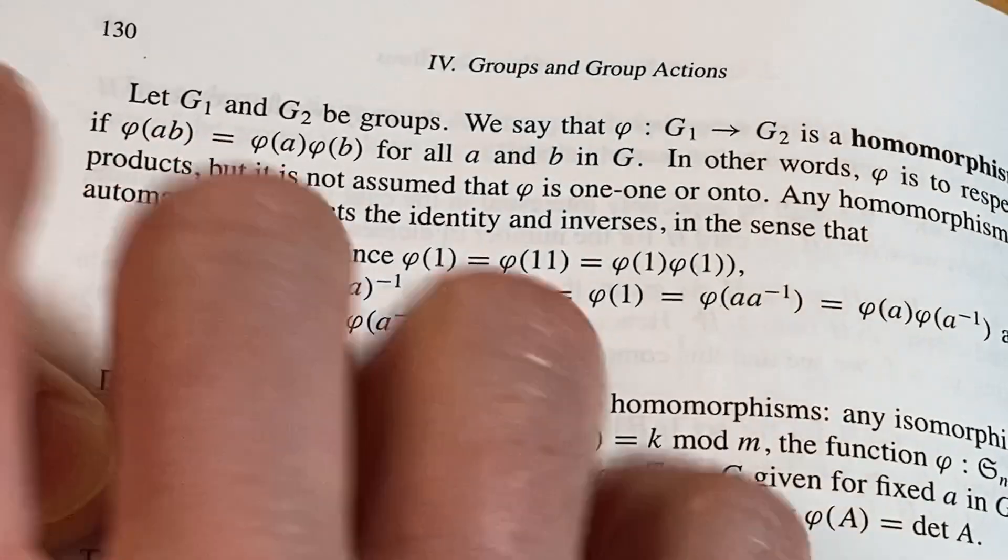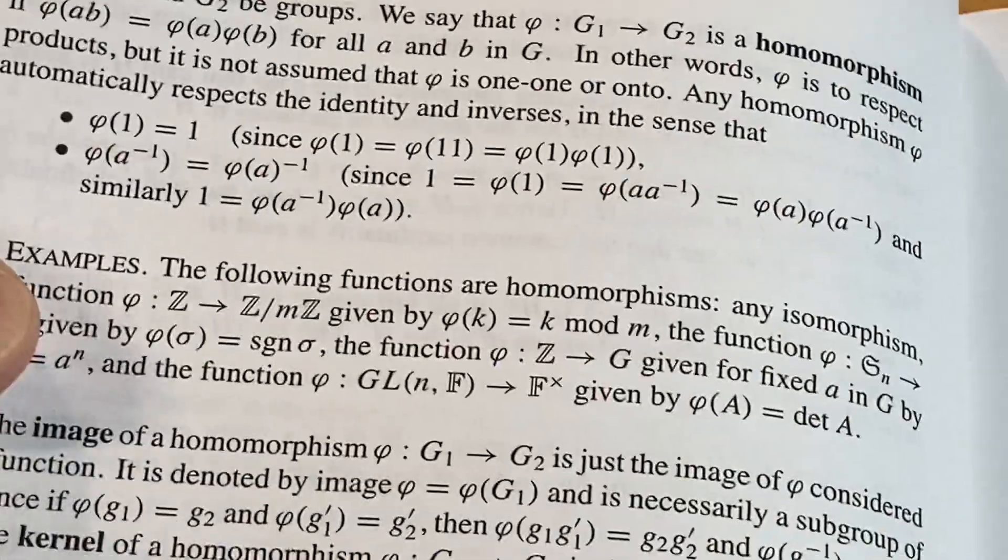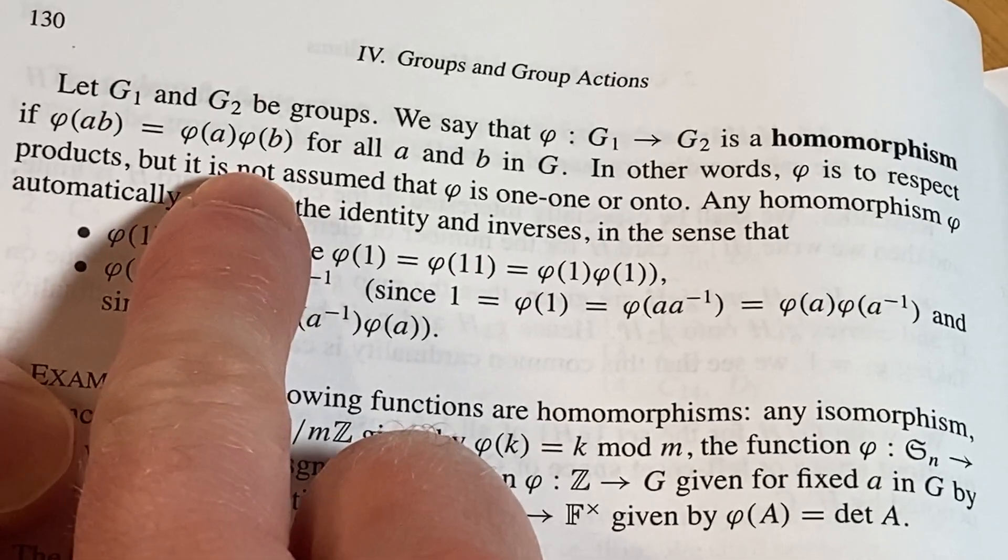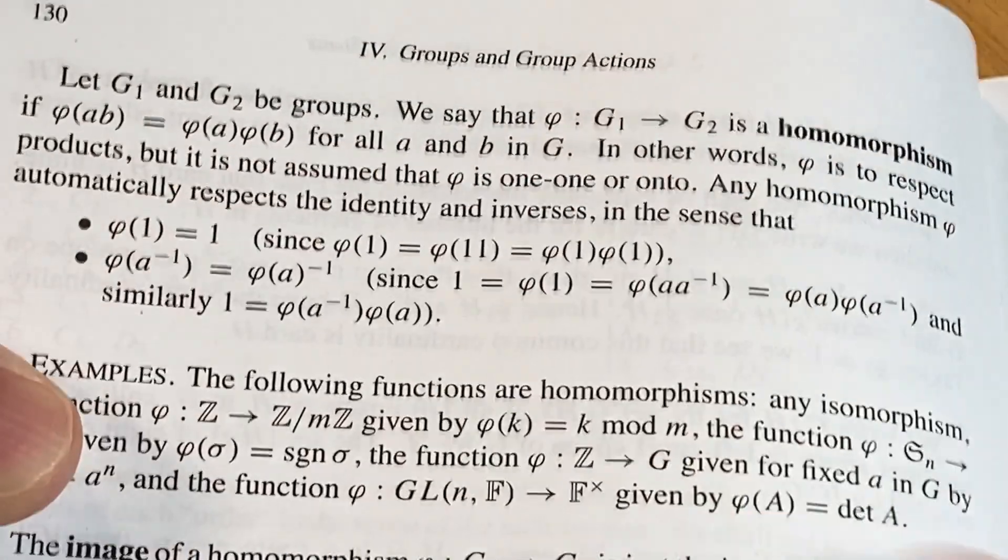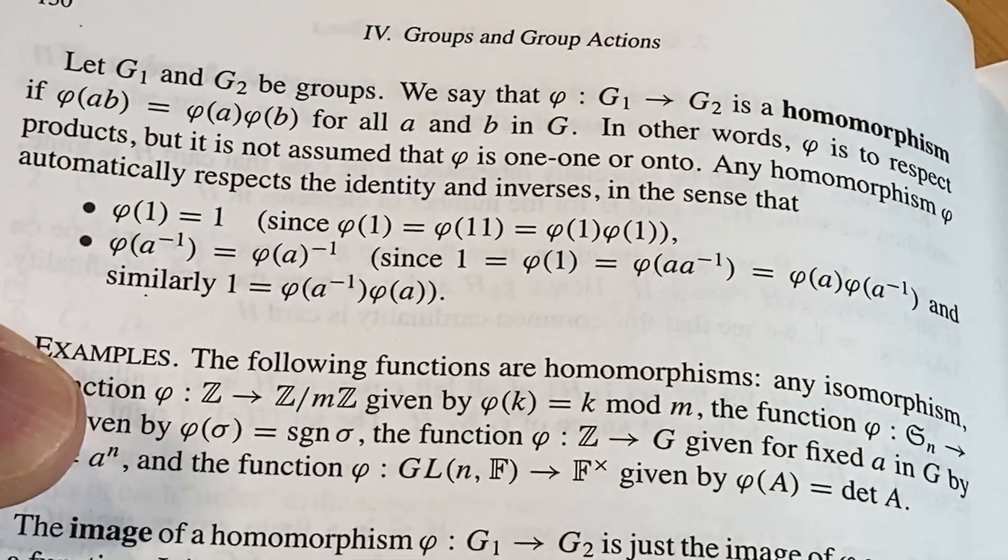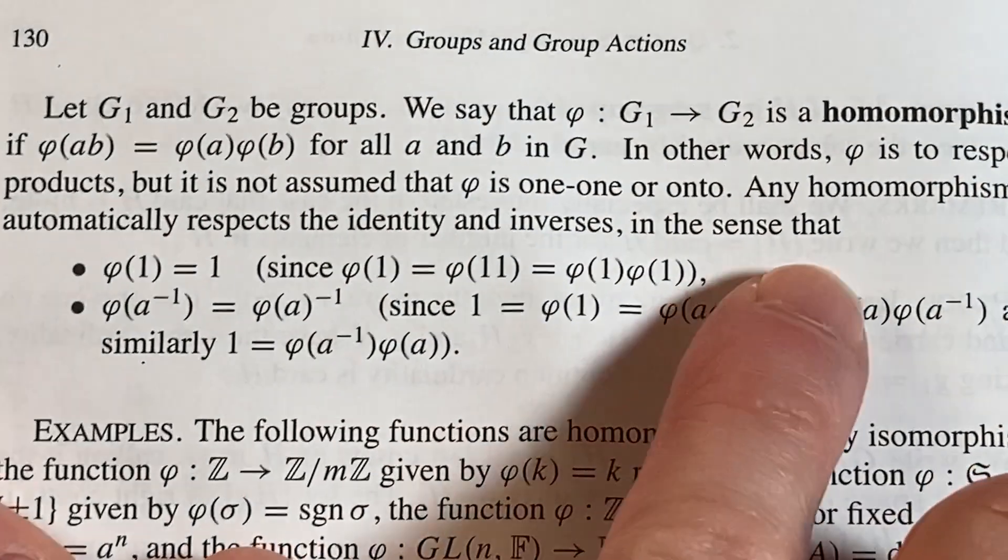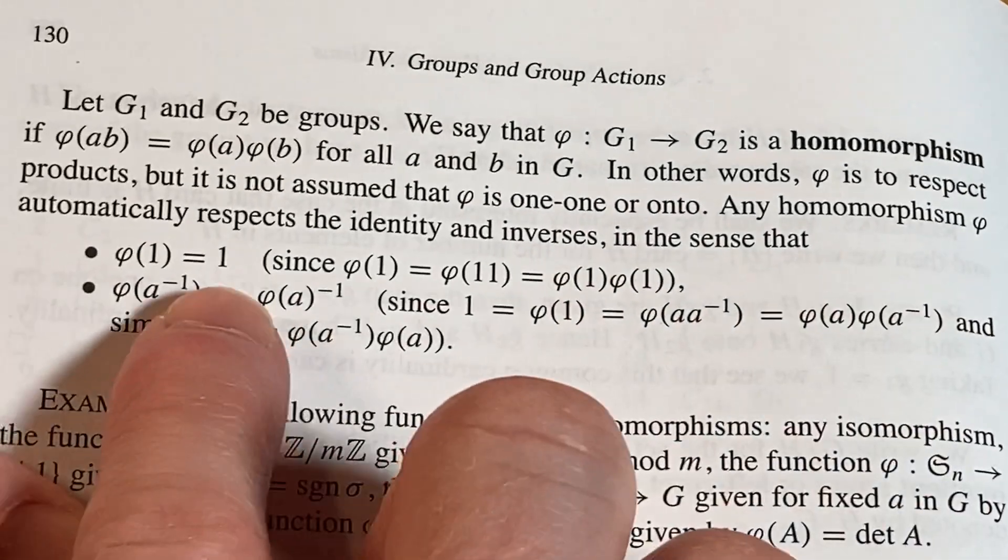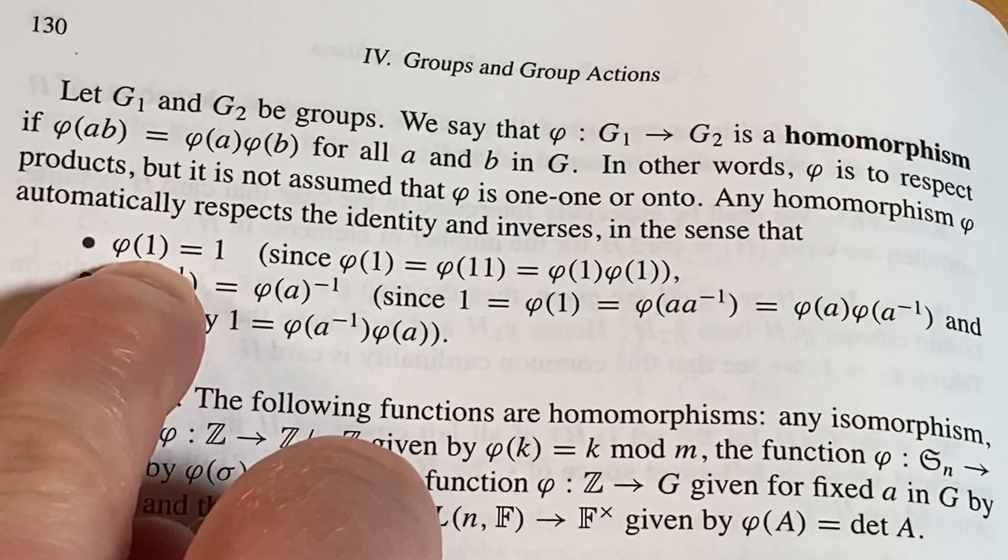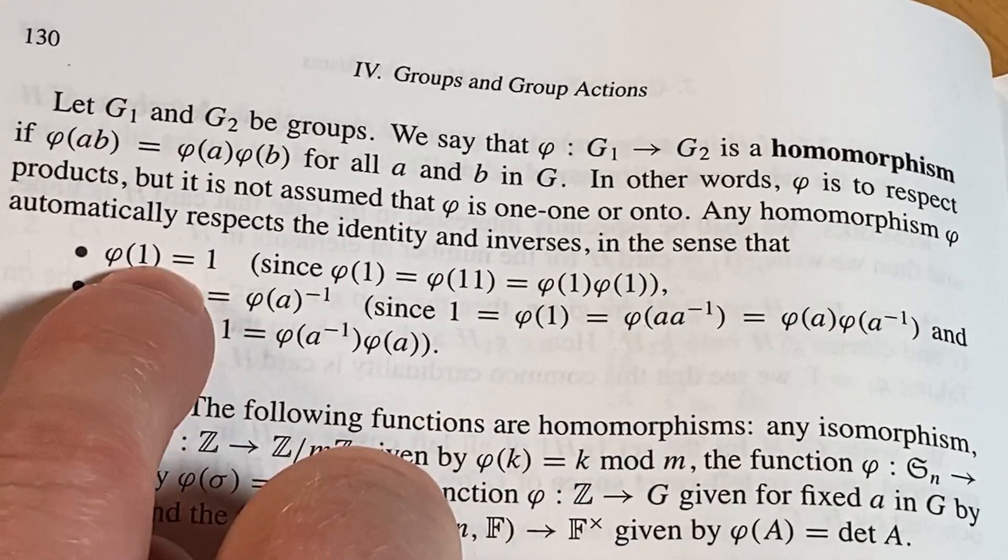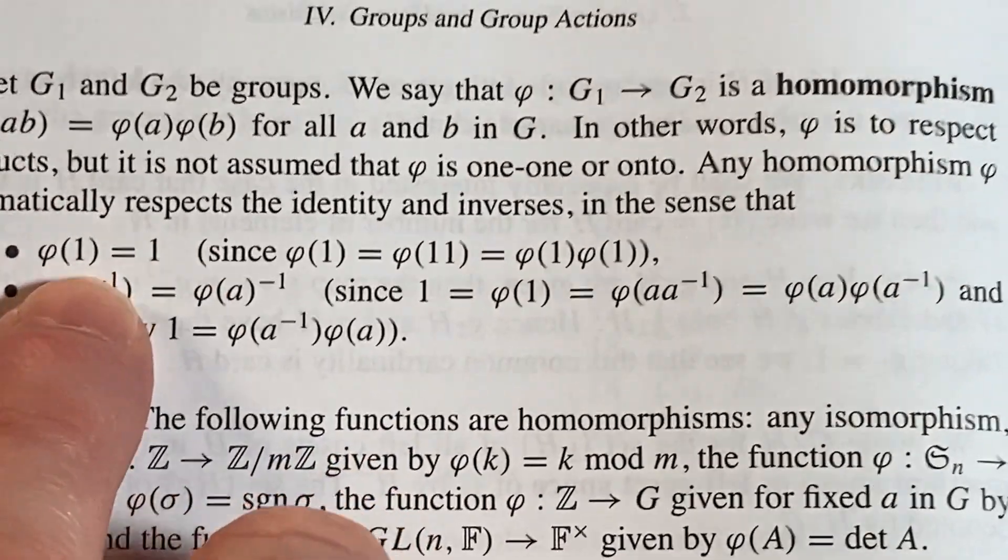And then here you have some properties. Any homomorphism phi automatically respects the identity and inverses in the sense that—oh, "respects," I like that. Now it says phi(1) equals 1. So these ones might be different, okay? So one here, this one—my finger is—this is in G₁. So this is the identity in G₁, whereas this one, this is the identity in G₂.